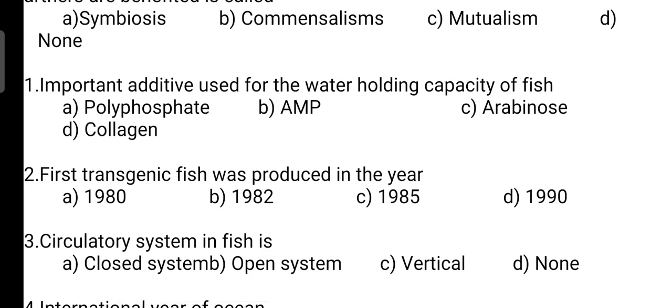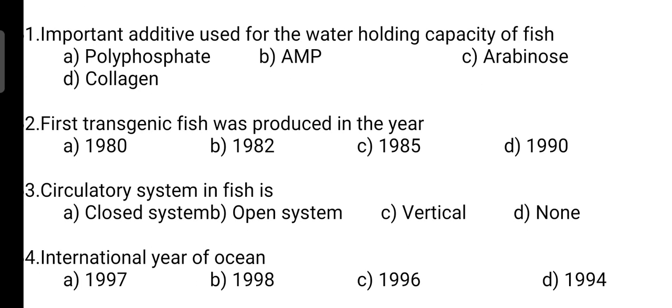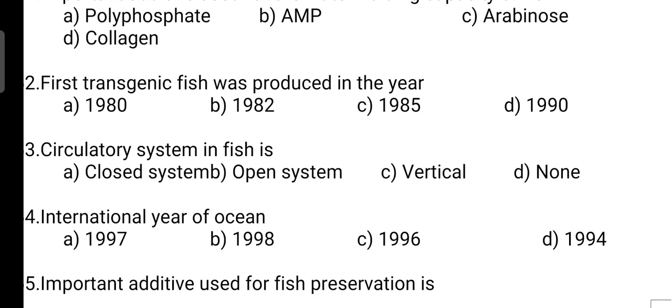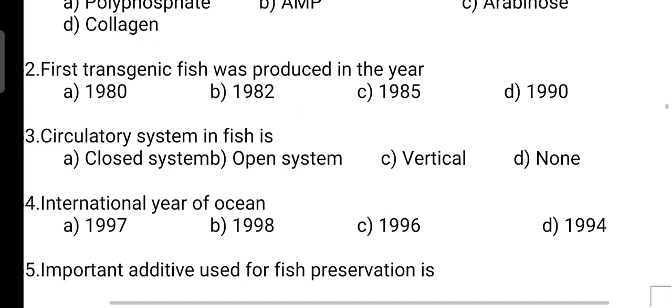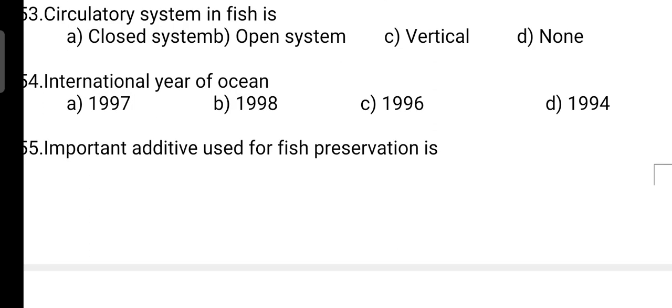Important additive used for the water holding capacity of fish: correct answer is Option A — it is polyphosphate. Next, first transgenic fish was produced in the year: correct answer is Option C — it is 1985. Next, circulatory system in fish is: correct answer is Option A — it is a closed system. International year of ocean: correct answer is Option B — it is 1998.